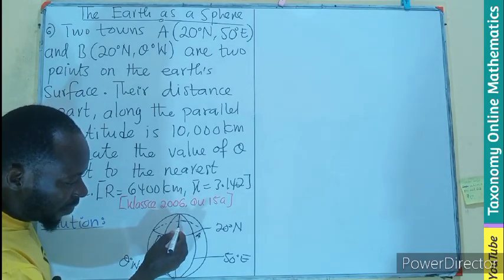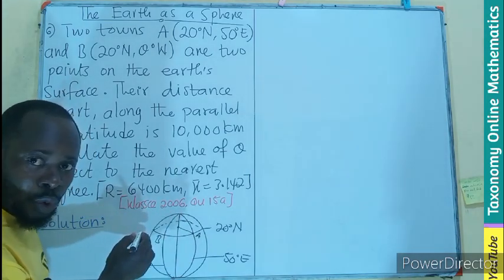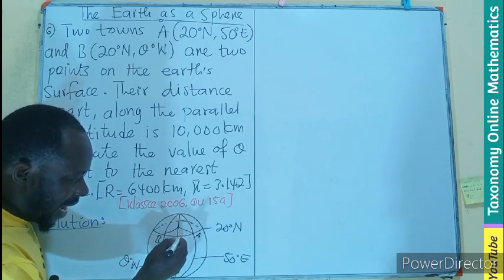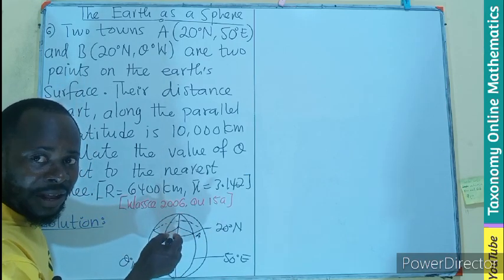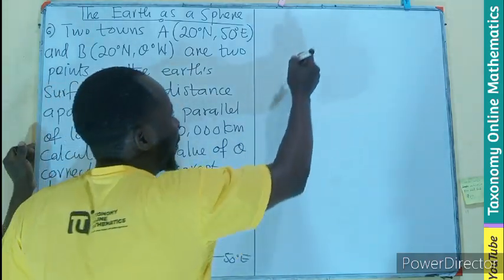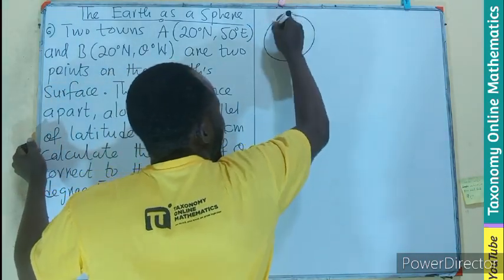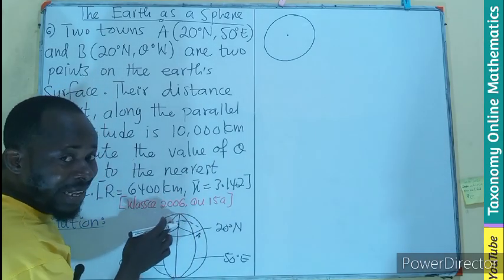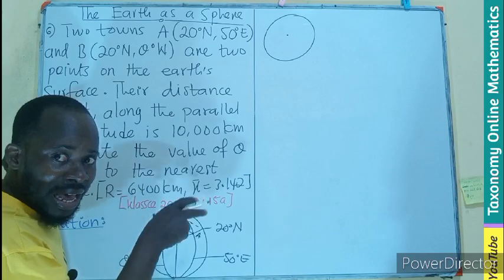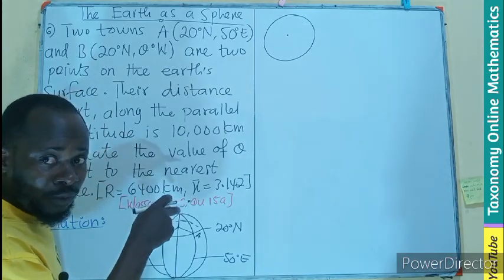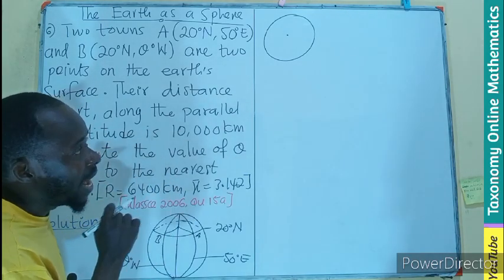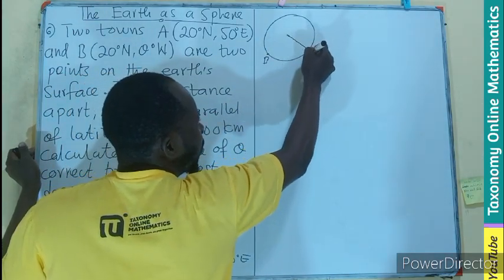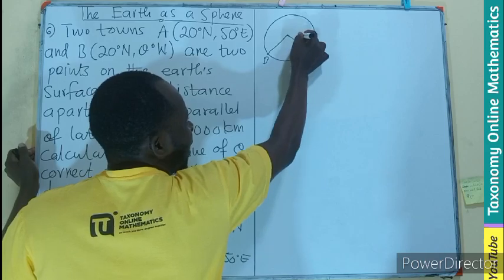Look at the circle. We are going to put the center here. Then from the center to A will be a radius. From center to B will be a radius. Then this line here becomes an arc of this circle. So I can really draw that circle representing the center here. This is the center of the earth. But this is the center of the circle, the small circle that is formed by the position of A and B. And this is the radius.